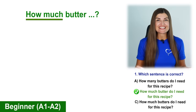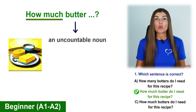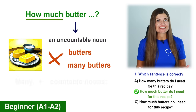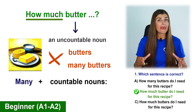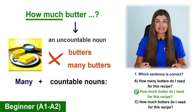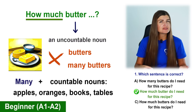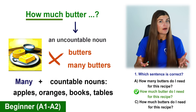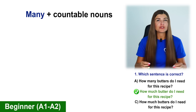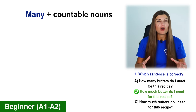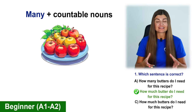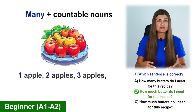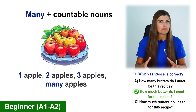Why? Butter is an uncountable noun. We cannot say butters — that's not correct. We use many with countable nouns like apples, oranges, books, tables and so on. In other words, we use many when we can count things like one apple, two apples, three apples, many apples.